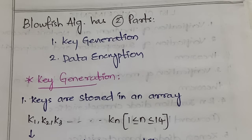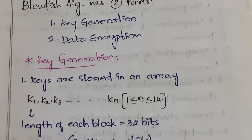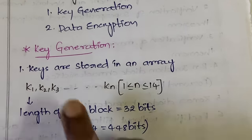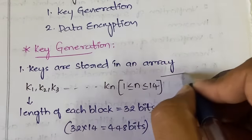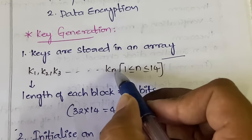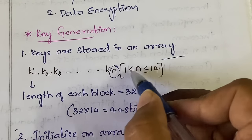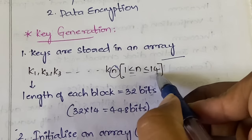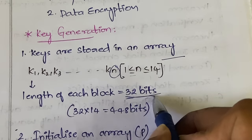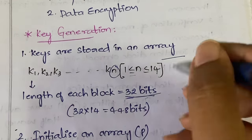Let's see how the key is generated. First, keys are stored inside an array represented as k1, k2, k3, and so on up to kn, where n can be between 1 and 14. The length of each block is equal to 32 bits. So 32 times 14 equals 448, which is the maximum key size for the Blowfish algorithm.